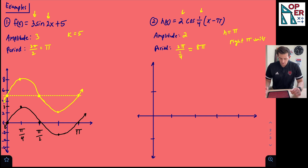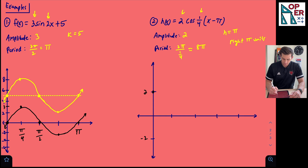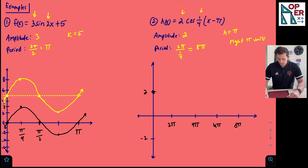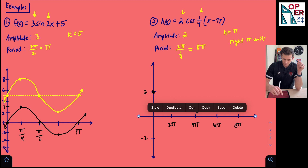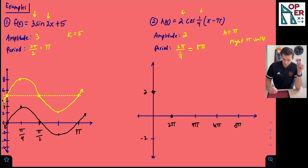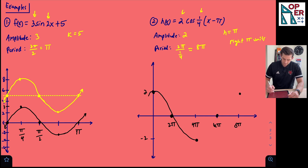Let's graph it as if we did not have the shift to the right, then we'll shift all points to the right. We're graphing cosine and the amplitude is two, so let's put two and negative two on the y-axis. For cosine, we start at (0, amplitude), so there's our starting point. The period is eight pi, so let's mark eight pi, six pi, four pi, and two pi. From there we go down to zero, down to negative two, back up to zero, and back up to positive two — that's the graph without translation.